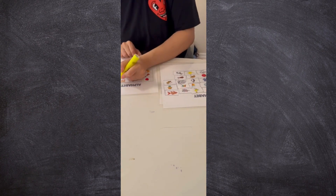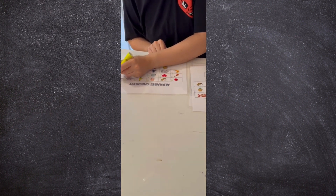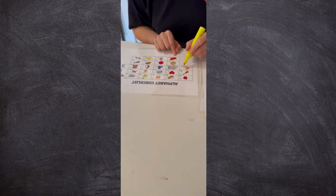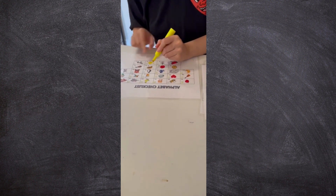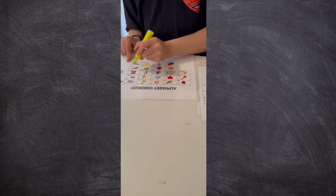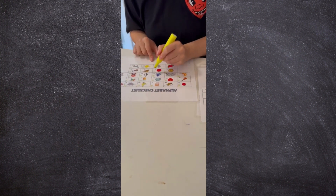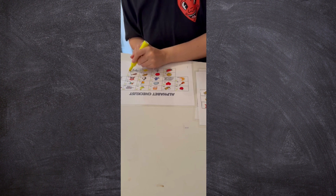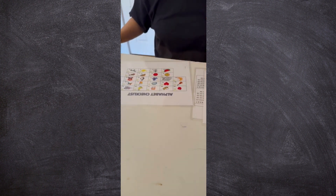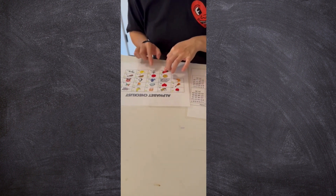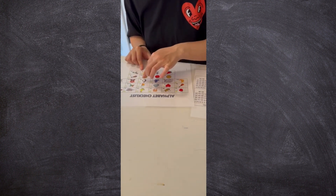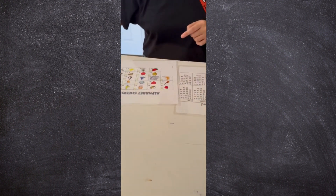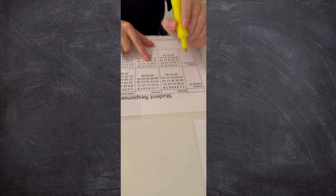So this is correct, correct, correct, correct, correct. That's wrong. This is correct. That one's wrong. That one's wrong. Right, right, right, right, right, and right. So I have 3, 4, 5, 6, 7, 8, 9, 10, 11, 12, 13, 14, 15, 16, 17, 18, 19, 20, 21, 22. So I did 22.